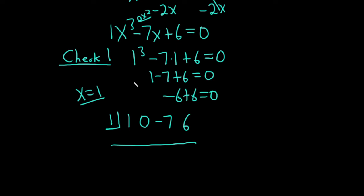In the synthetic division process, the very first step is to bring down the 1. 1 times 1 is 1, you add, you get 1. 1 times 1 is 1, you add, you get negative 6. Negative 6 times 1 is negative 6, you add, you get 0. And we know that it should be 0 because 1 is a solution.